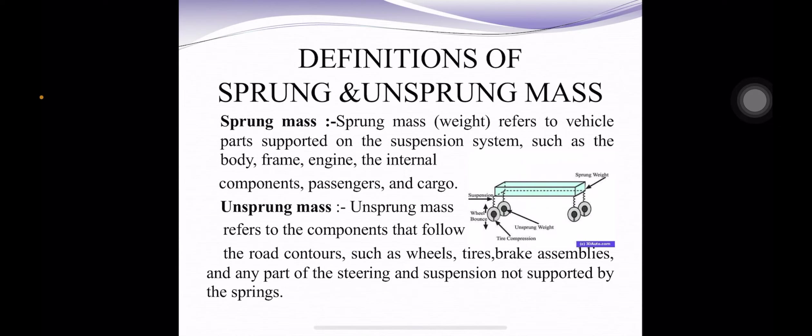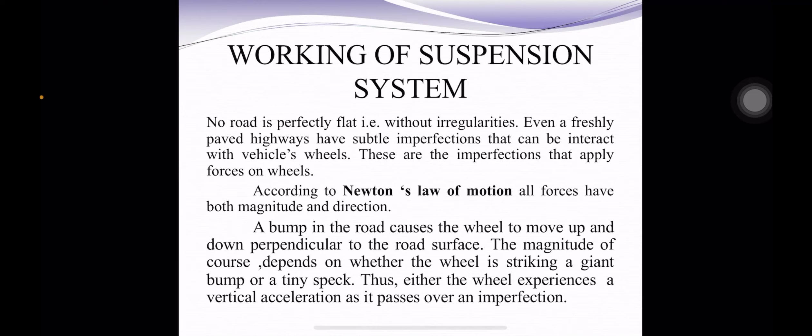The definitions of sprung and unsprung mass: the sprung mass refers to the vehicle parts supported on the suspension system, such as the body, frame, engine, internal components, passengers and cargo. The unsprung mass refers to the components that follow the road contours, such as wheels, tires, brake assemblies and any part of the steering and suspension not supported by the springs.